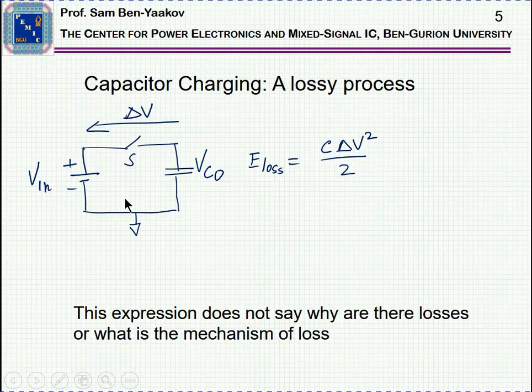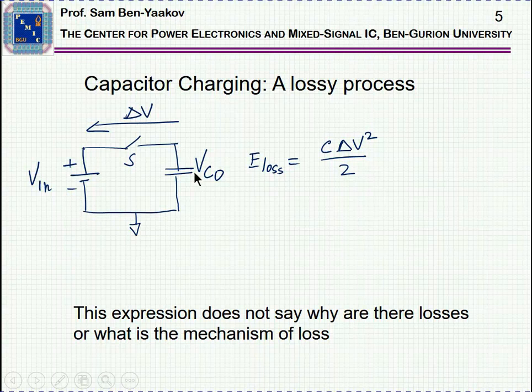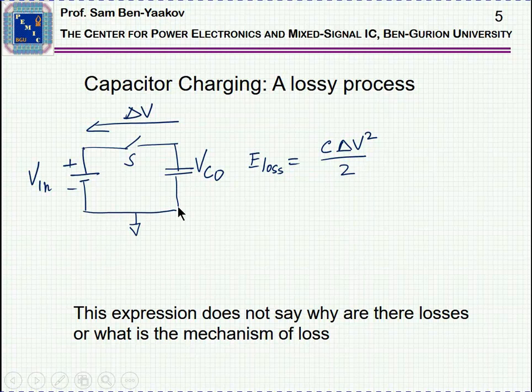If Vc sub-zero is zero, that is, if the capacitor is not charged, then delta V is actually V in, so the energy lost will be C V in square over 2, and this is exactly the energy that will be eventually stored in the capacitor. So, in this simple capacitor charging scheme, half of the energy that came out of the V in is actually lost through this equation, while only half of it is actually used to charge the capacitor. So, the efficiency is very low, 50%, and here is a real problem.